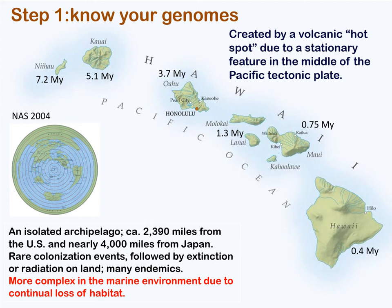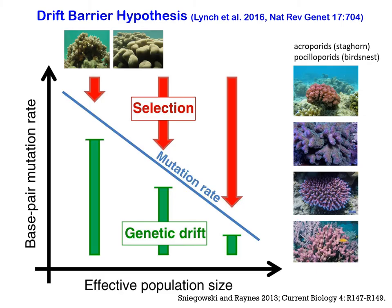Beyond this interesting formation story, the Hawaiian archipelago is the most isolated populated archipelago in the world, and therefore we can expect that introductions of species are probably going to be rare and we can expect a lot of endemics. Combined with the way the islands are formed, we should expect to find some differences within species that live on these islands.